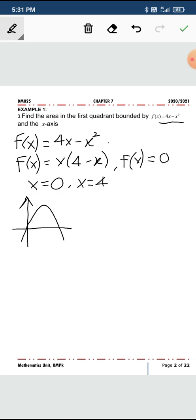So the x-intercept is 0 and 4, and you are interested in finding this area. Let me label the x-axis. To find this area, you can use the integration formula.